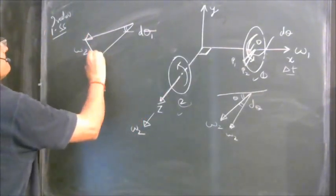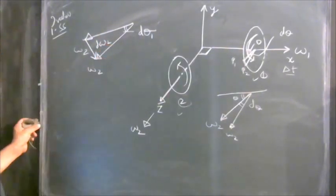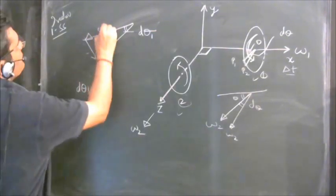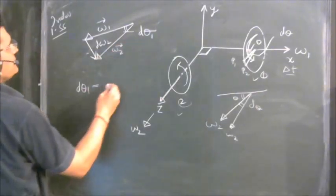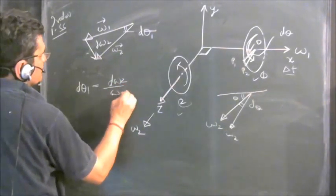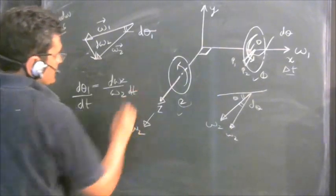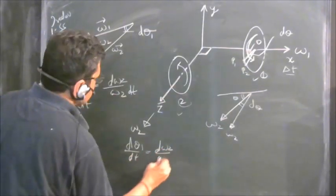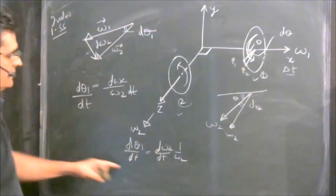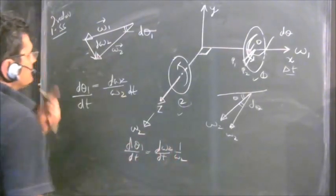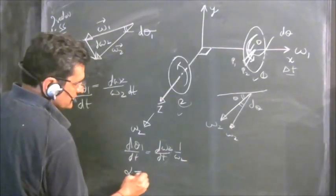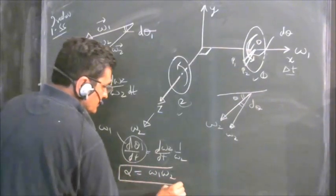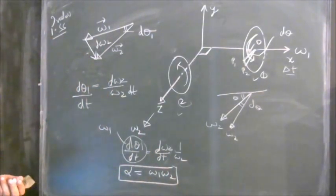Joining these two vectors gives d-omega 2, so d-theta 1 equals d-omega 2 over omega 2 (arc over radius). Dividing both sides by d-t: d-theta 1 / d-t equals (d-omega 2 / d-t) times (1 / omega 2). Now d-theta 1 / d-t is omega 1, so the relative angular acceleration alpha equals omega 1 times omega 2. That's the answer for the relative angular acceleration.